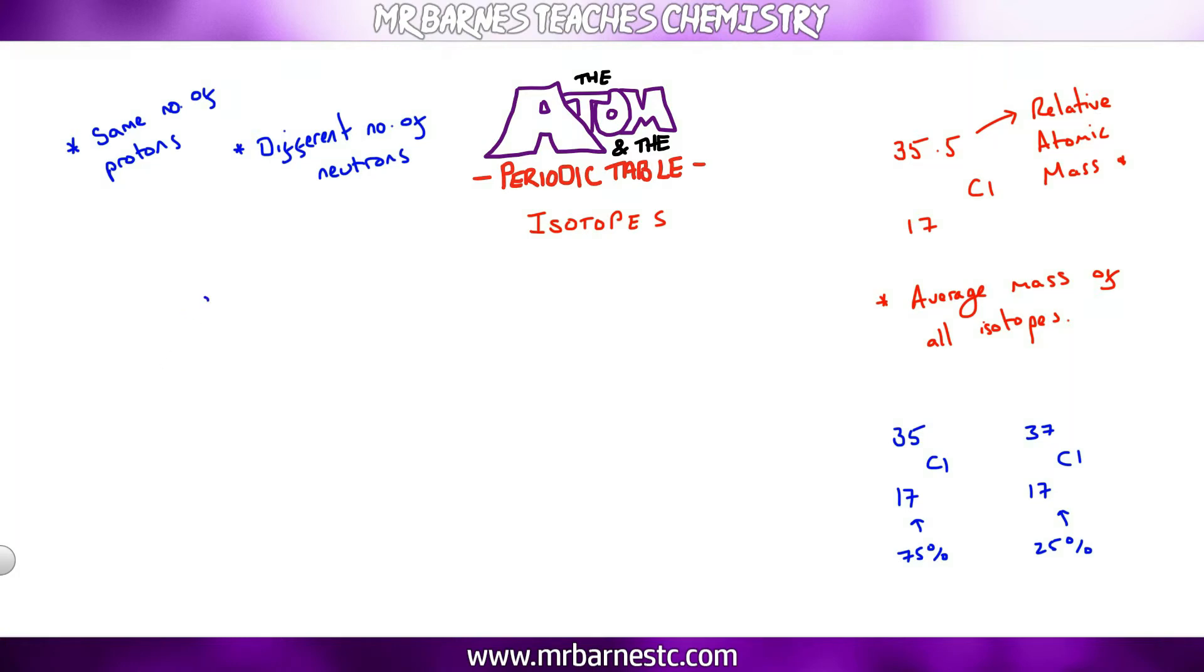The next thing you do need to be able to do regardless of the paper you're sitting is work out the relative atomic mass for an isotope. Now to do that all you need to do is take the mass number, multiply it by the percentage of the isotope and divide by a hundred. You do that for all the isotopes and then you add them together.